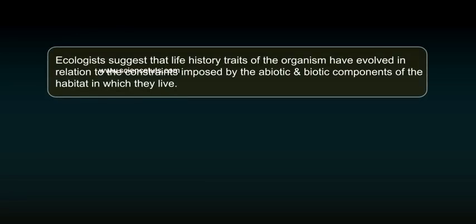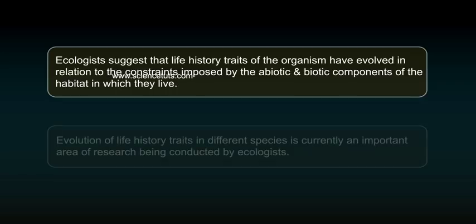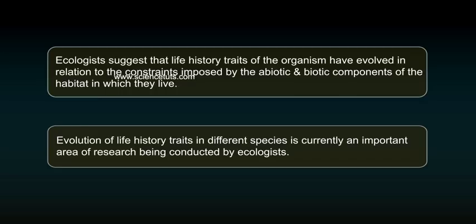Ecologists suggest that life history traits of organisms have evolved in relation to the constraints imposed by the abiotic and biotic components of the habitat in which they live. Evolution of life history traits in different species is currently an important area of research being conducted by ecologists.